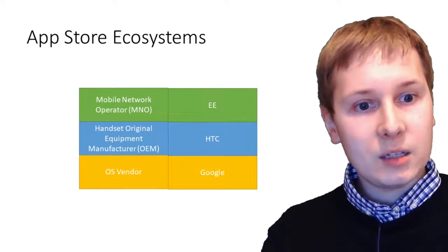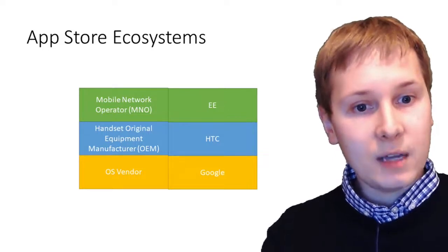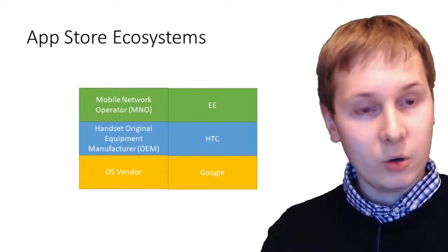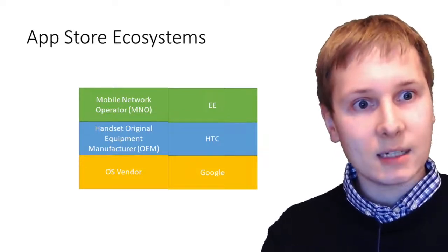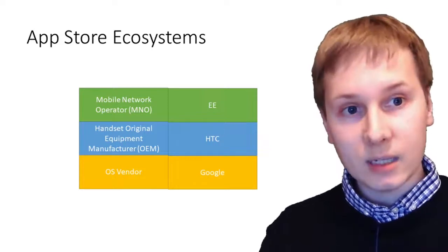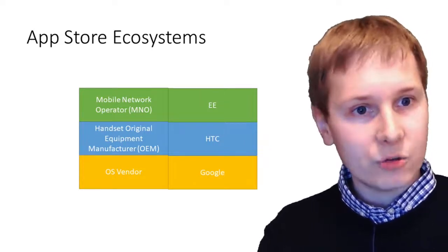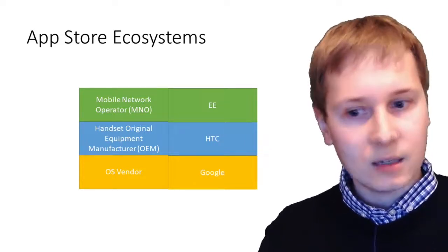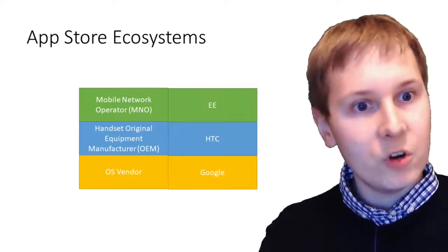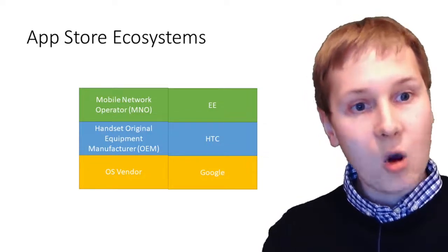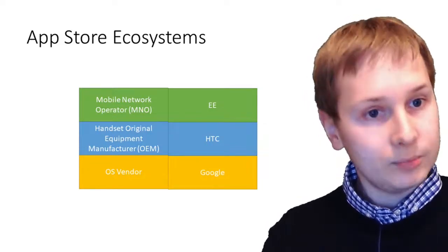A prime example is the Amazon Fire devices, which are based on Google's operating system but come with Amazon's ads all over the place because Amazon controls the device and has a modified version of the OS with their own app store.